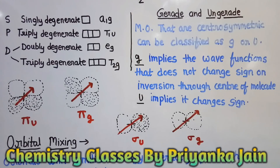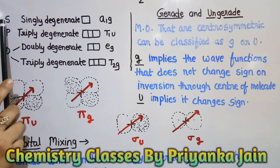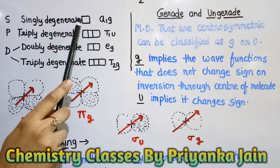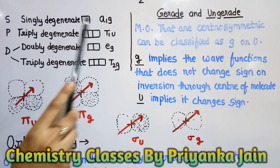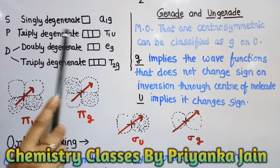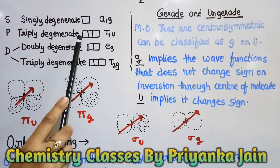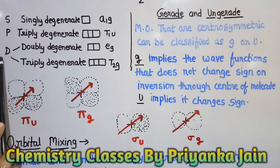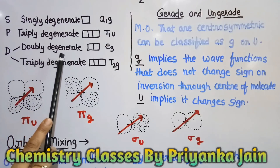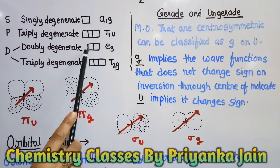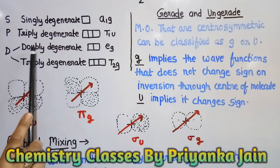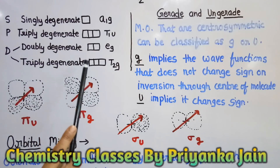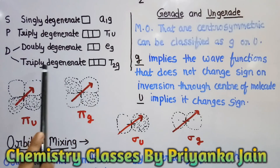Now we see the abbreviations used for different types of orbitals. The s orbital is singly degenerate and is given the abbreviation a1g. The p orbital has three orbitals — px, py, and pz — so it is triply degenerate and given the abbreviation t1u. For d orbitals, the doubly degenerate set dx²−y² and dz² is given the abbreviation eg, while the triply degenerate set dxy, dyz, and dxz is given the abbreviation t2g.